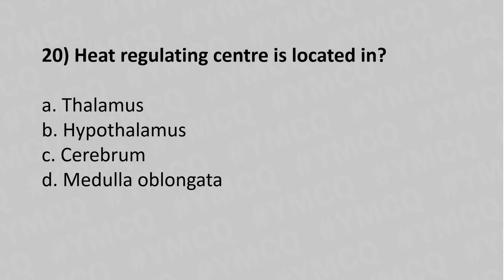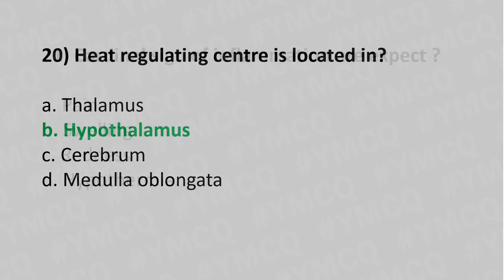Now let's move to question number twenty: The heat-regulating center is located in which of the following? Option A: thalamus. Option B: hypothalamus. Option C: cerebrum. Option D: medulla oblongata. The answer is Option B: hypothalamus.